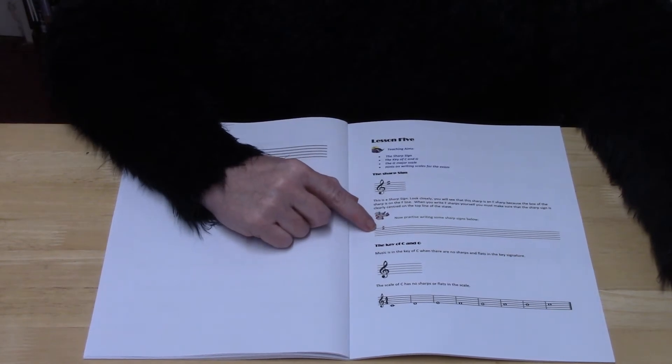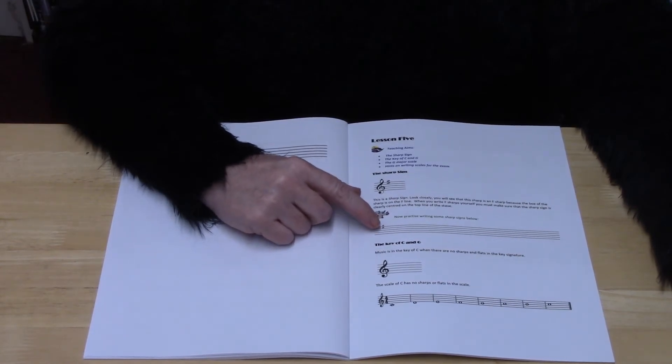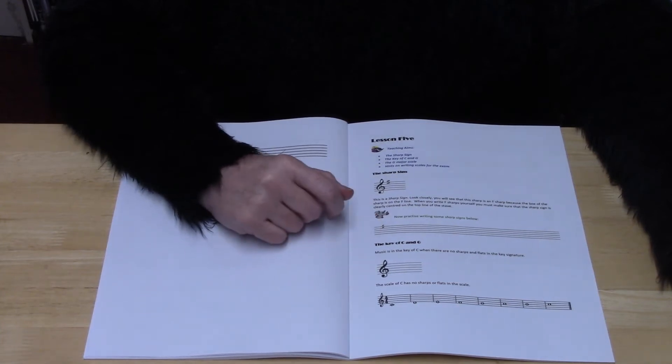Just make sure when you do write this that you do put the box clearly centered on the top line, which is your F line.